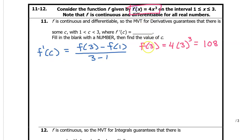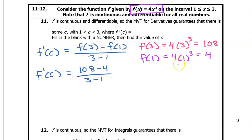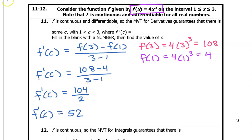Here's function f. So f at 3 will equal 4 times 3 cubed, which is 108. Similarly, f at 1 is 4 times 1 cubed, which equals 4. Substituting these values into the expression for f prime at c gives us f prime at c equals 104 divided by 2, which means f prime at c will equal 52 for some value of c. This is the number that goes in the blank: f prime at c equals 52.